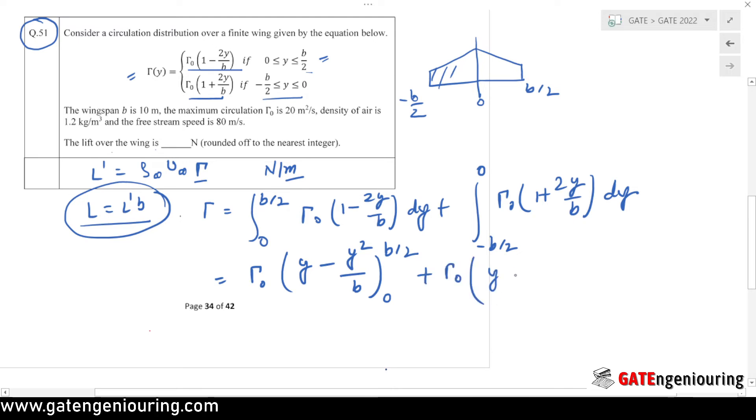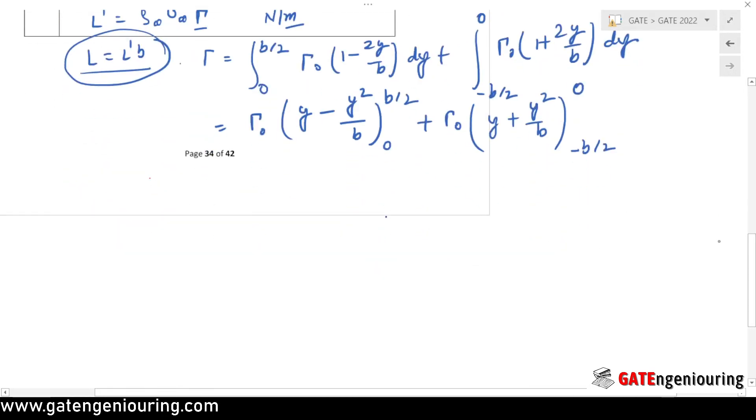And here, y + y²/b, and limits are from minus b/2 to 0. Put the limits and just simplify it, which will give us the answer.